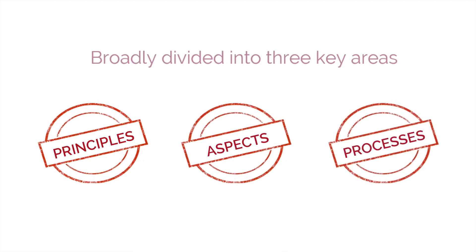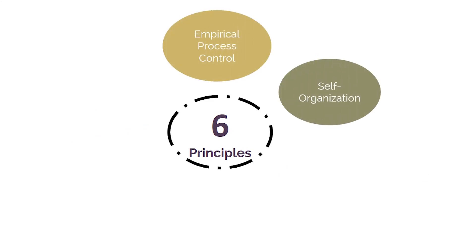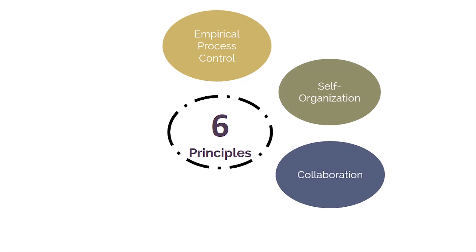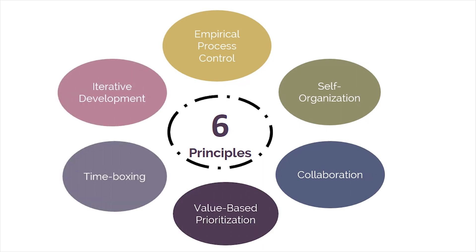Let's start with the principles. A total of six principles given in the SBOT Guide form the foundation of Scrum. They are: empirical process control, self-organization, collaboration, value-based prioritization, time boxing, and iterative development. These principles are the chief guidelines for implementing Scrum.